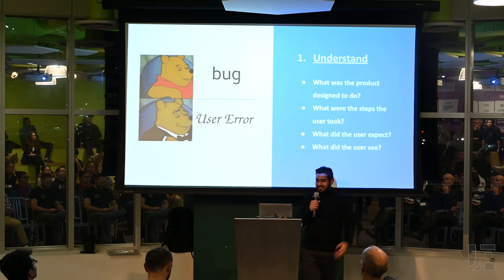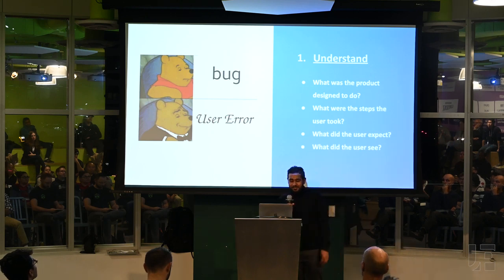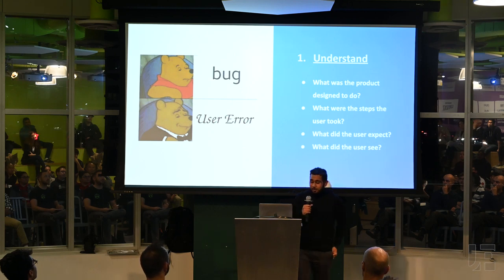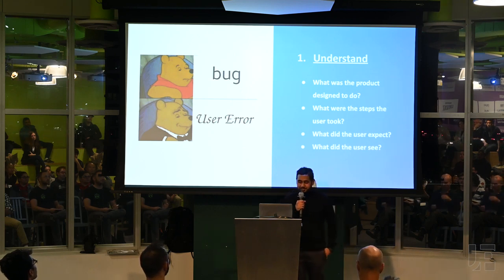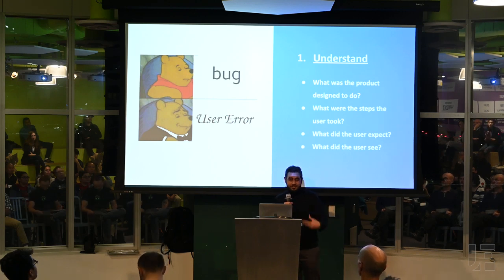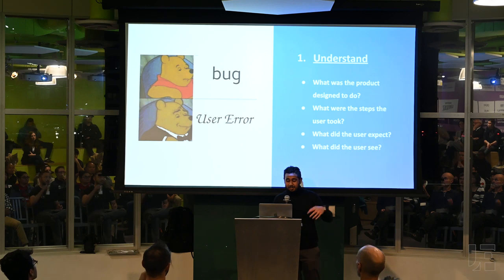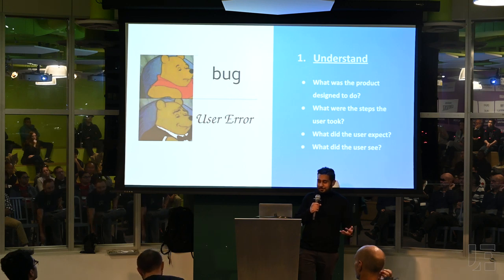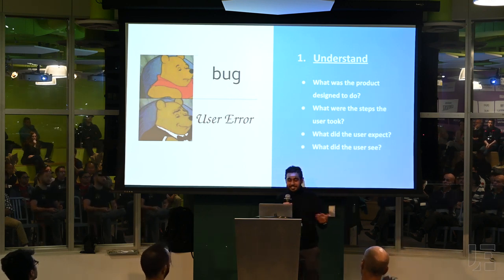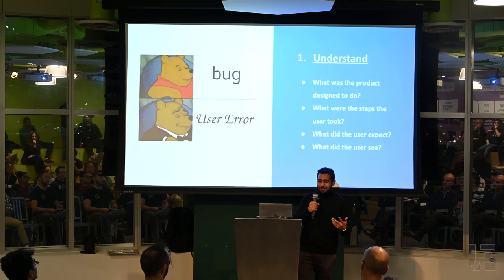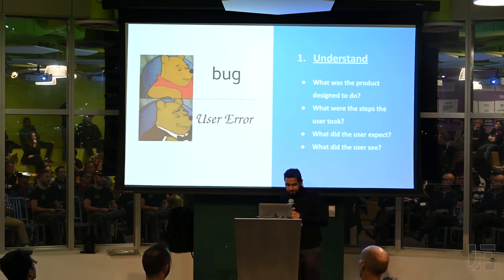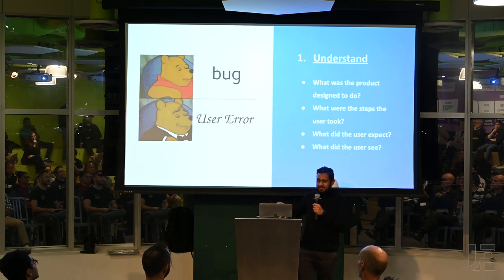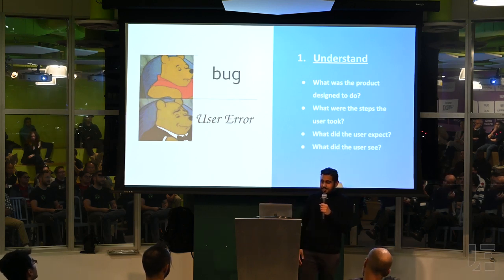The first step is actually understanding the bug. As soon as you have a bug, you should try to ask four questions: What was the product designed to do? What steps did the user take? What did the user expect? And what did the user see? These questions are very important because they will help you in the next few steps. For example, if your product manager brings a bug to you and the product is not designed to do that specific thing, then this is really not a bug — that should be a feature request, not a bug.